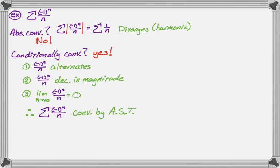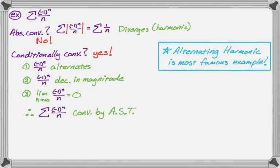It's conditionally convergent because it only converges when it's alternating. This is actually the alternating harmonic series, which is by far the most famous example of a conditionally convergent series. It's the one you should really think of when you're trying to orient yourself — is it conditionally convergent or absolutely convergent? Think of this series; it can help you clarify that.